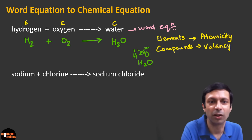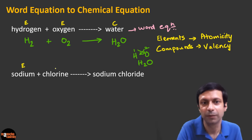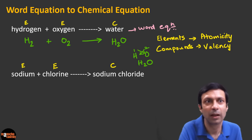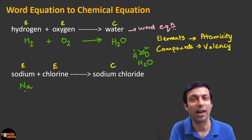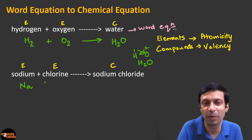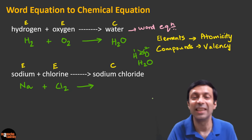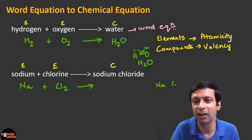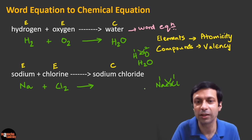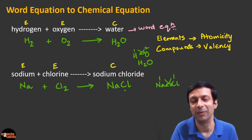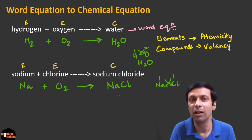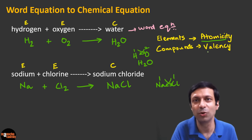Let's try this rule with the next equation: sodium plus chlorine gives sodium chloride. Sodium is an element, chlorine is also an element, and sodium chloride is a compound. For elements we use atomicity. Sodium's symbol is Na and its atomicity is 1 because all metals have an atomicity of 1. Chlorine's symbol is Cl and its atomicity is 2, so one molecule of chlorine is Cl₂. Since sodium chloride is a compound, we use valency. The valency of sodium is 1 and chlorine is 1, so doing a crisscross gives us NaCl — that is the molecular formula of sodium chloride.